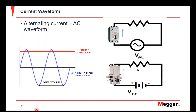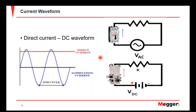Different circuit breakers require different waveforms, and we have different instruments that provide different outputs to satisfy these requirements. Typically for AC waveform, we use a typical molded-case circuit breaker with an AC current source to push current through and perform the primary current injection test. Another method uses a DC waveform for certain types of circuit breakers, such as a high-speed DC circuit breaker used in railway infrastructure or DC vehicular applications.